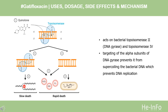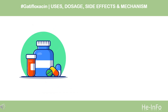Mechanism of Action: The bactericidal action of Gatafloxacin results from inhibition of the enzymes topoisomerase 2 (DNA gyrase) and topoisomerase 4, which are required for bacterial DNA replication, transcription, repair, and recombination. The half-life of Gatafloxacin is 7 to 14 hours.